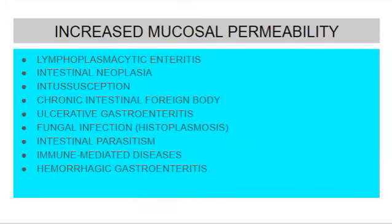Lymphoplasmacytic enteritis is a form of inflammatory bowel disease that interferes with intestinal functions and produces protein loss. Intussusception, if chronic, is often associated with protein loss. Intestinal foreign bodies can also produce low protein levels. Ulcerative gastroenteritis is inflammation of the lining of the GI tract secondary to some form of inflammation, drug administration, neoplasia, and foreign bodies.